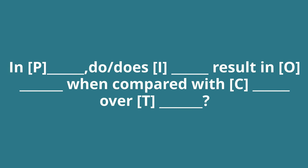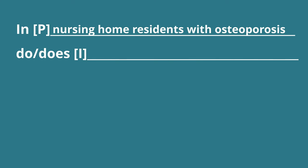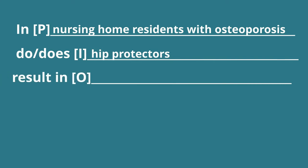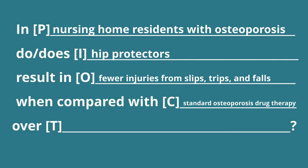Now we can insert some information into the blank spots. For P, the patient population or problem I'm going to look at is nursing home residents with osteoporosis. For I, the intervention or exposure I'm interested in is hip protectors. For O, the outcome I want to know about is fewer injuries from slips, trips, and falls. For C, the comparison I think is relevant is standard osteoporosis drug therapy. Now for T, the time frame I'm going to look at is the course of the resident's stay.